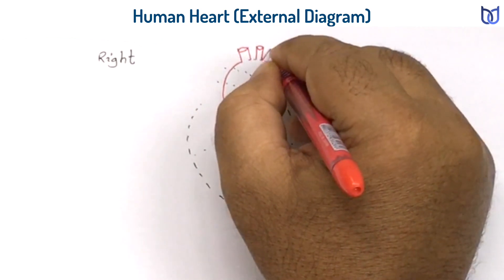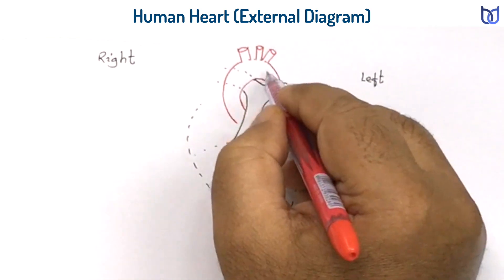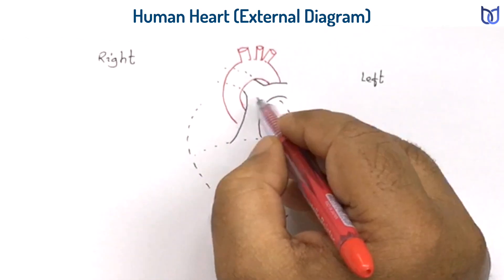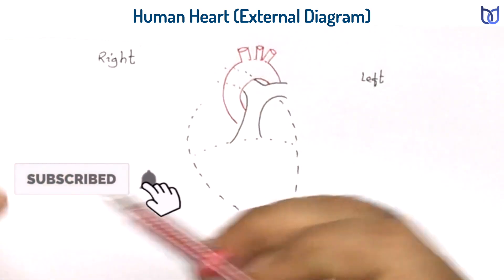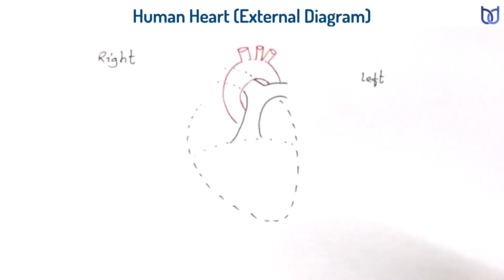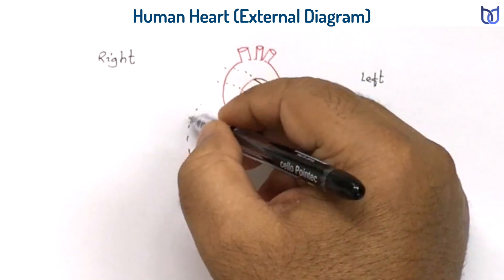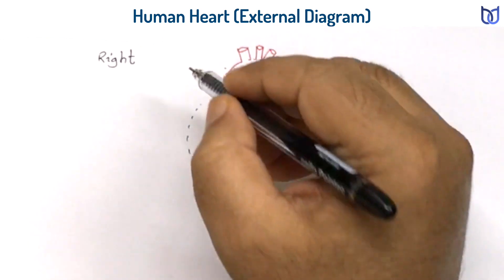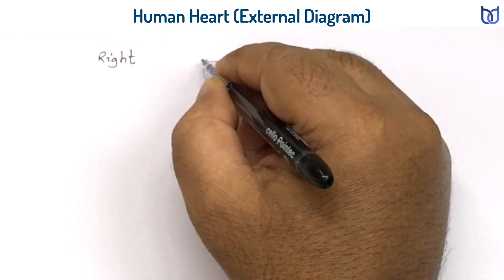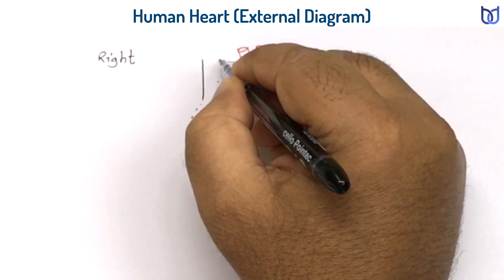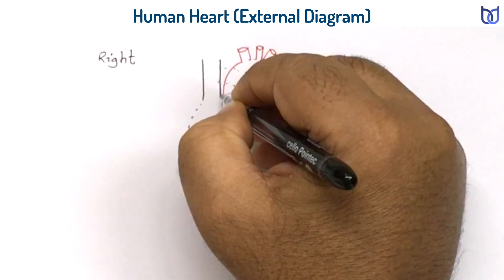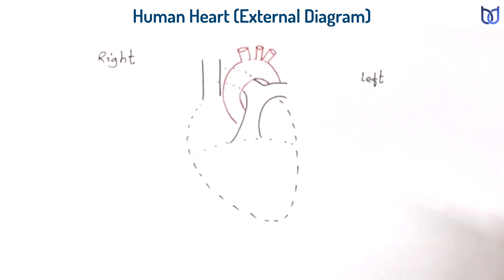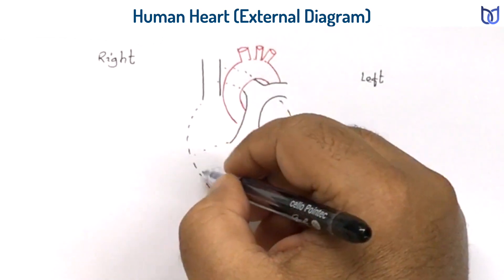The systemic aorta arises from the left side, so two different blood vessels are shown in the anterior part of the heart. The right auricle or right atrium is connected with two different blood vessels: one is the superior vena cava coming from the upper side and another is the inferior vena cava from the lower side.